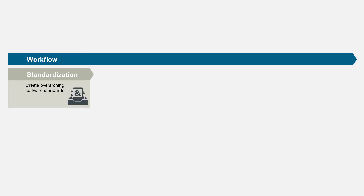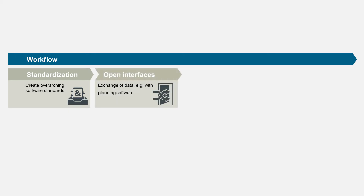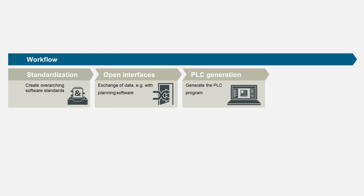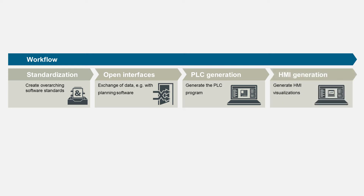We'll show you how using these four steps. Starting with a typical machine, we'll look at the basics: standardization. Open interfaces are needed in order to integrate planning data, for example. And then we want to automatically generate the control code and create the visualization based on these generated modules at the click of a button.